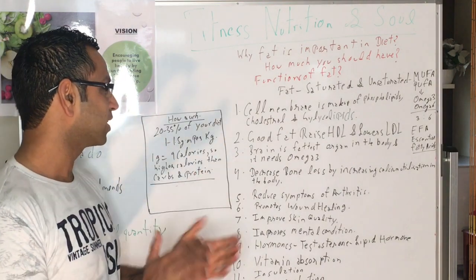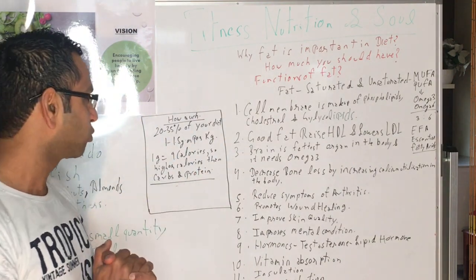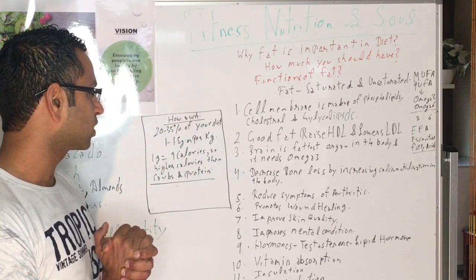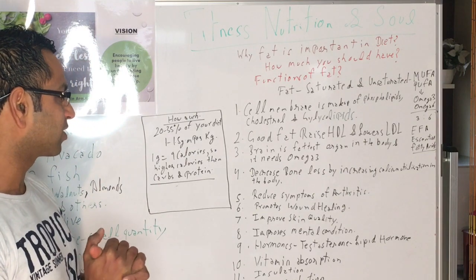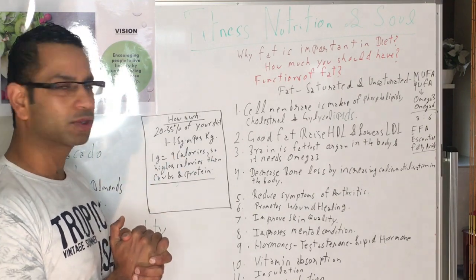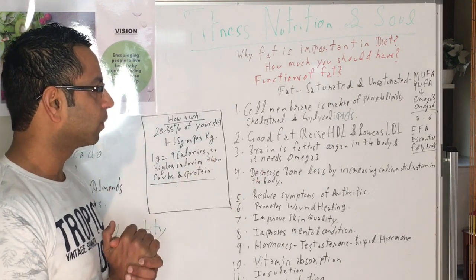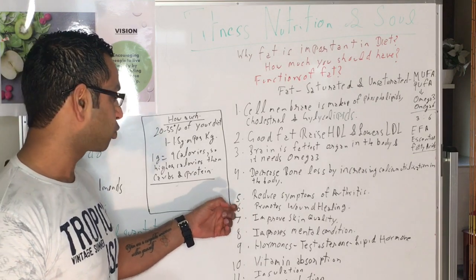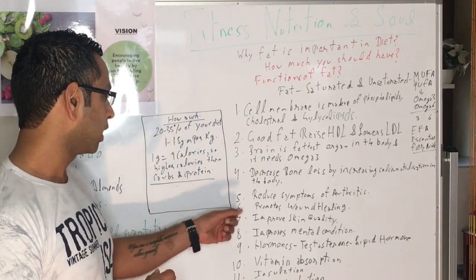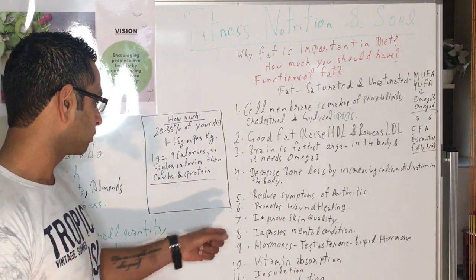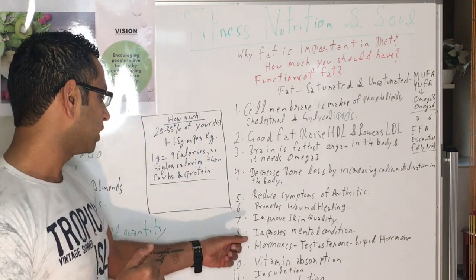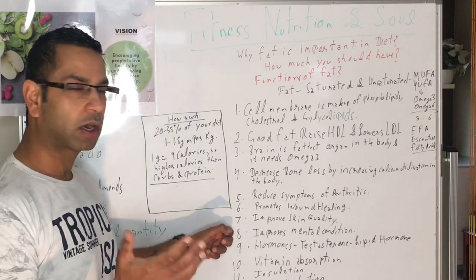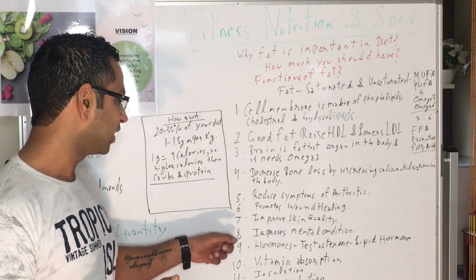The fourth function is it decreases bone loss by increasing calcium utilization in the body. The fifth is it reduces the symptoms of arthritis, and that's because of essential fatty acids, not saturated fat. It promotes wound healing, improves skin quality, and improves mental condition. If your diet is only around 10% fat, it can affect mental condition in the long term.